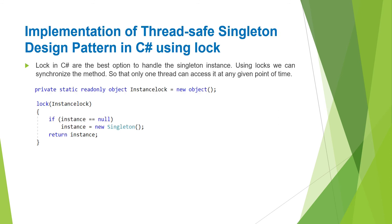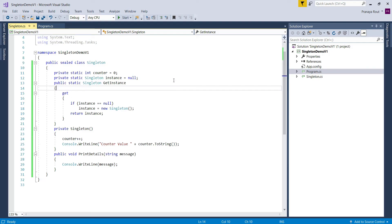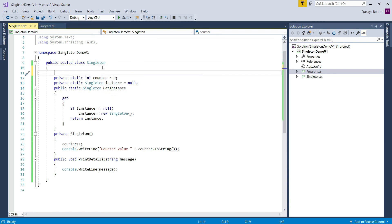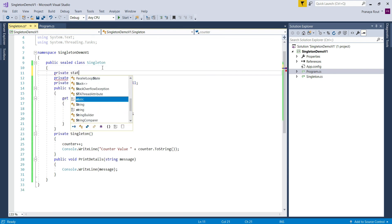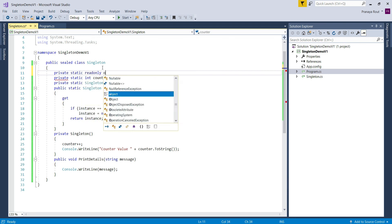Implementation of thread-safe singleton design pattern in C# using lock. Let us see how to implement it using locks to handle the multi-threaded environment. The key point to remember is that lock is the best option to handle the singleton instance — using lock we can synchronize the method so that only one thread can access it at any given point in time. Let us move to Visual Studio. First we need to create a private static read-only object.